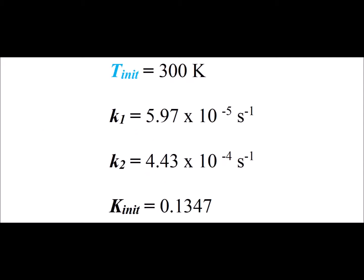Our initial temperature is 300 degrees Kelvin. The forward rate constant is 5.97 times 10 to the minus 5 inverse seconds. The rate constant K2 for the reverse reaction is 4.43 times 10 to the minus 4 inverse seconds. And the equilibrium constant at this initial temperature is 0.1347.